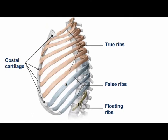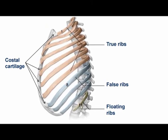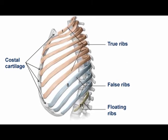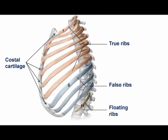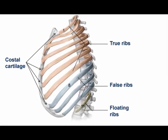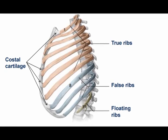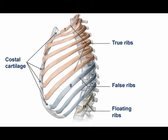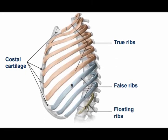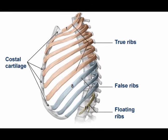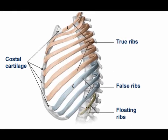The ribs are also at a variety of angles. Ribs number 1 through 9, as we go downward, increase in the obliqueness of their direction. Then ribs number 10, 11, and 12 decrease in the obliqueness of their direction. So rib number 9 is the most oblique.